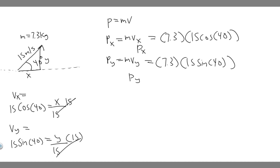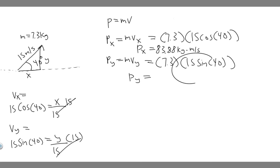Going ahead and plugging into the calculator: 7.3 × 15 × cos(40°) gives px ≈ 83.88 kilogram meters per second. Make sure your calculator is in degrees mode — this is 40 degrees, not radians — or you'll get a wrong answer.